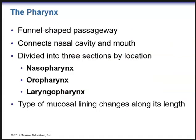Next we'll talk about the pharynx — a funnel-shaped passageway that connects the nasal cavity as well as the mouth. The pharynx is divided into three sections based on location. The nasopharynx is posterior to the nasal cavity and ends around the uvula. Between the uvula and the epiglottis, posterior to the oral cavity, is the oropharynx. After the epiglottis down to the larynx, we have the laryngopharynx. The type of mucosal lining changes along the length of the pharynx.